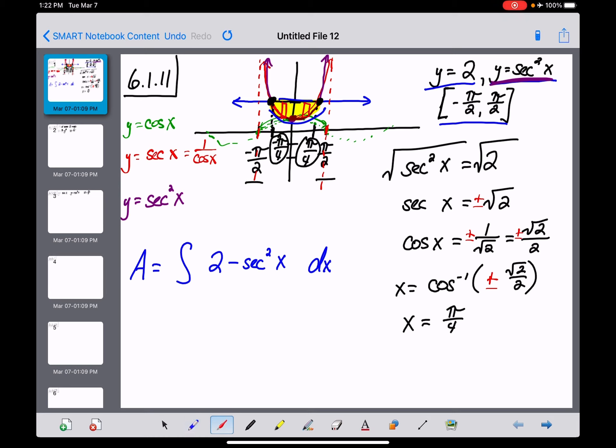The limits of integration are the lowest and highest x values in this region. You could go from negative pi over 4 to positive pi over 4, and this would work. The other option is to take advantage of the fact that this region is symmetrical, so you could use a lower limit of 0 and double the result.